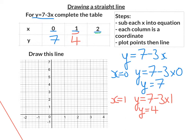Lastly, let's put in x equals 2. So we have y is equal to 7 minus 3 times 2. 3 times 2 is 6. 7 take away 6 is 1. So put 1 there.